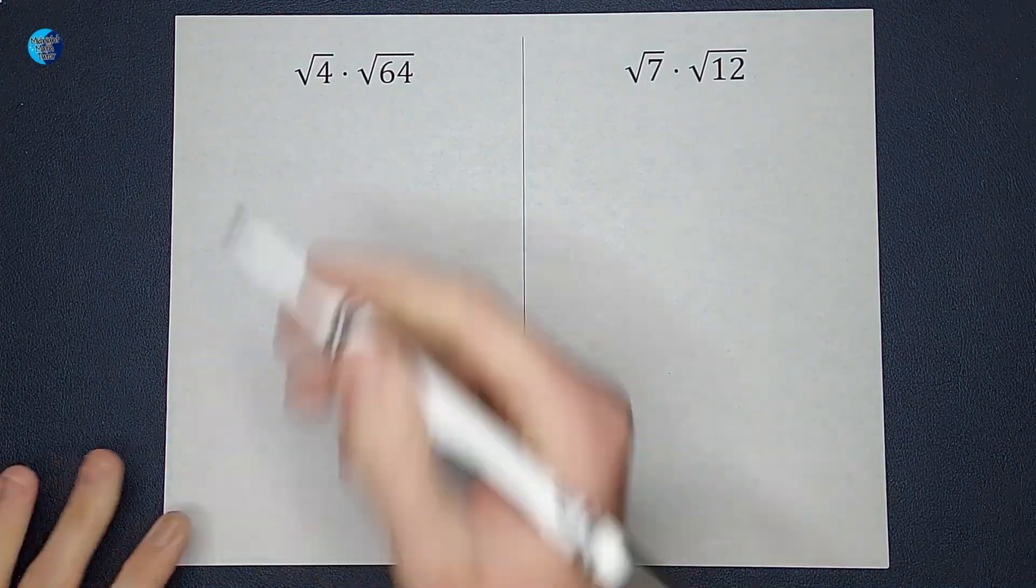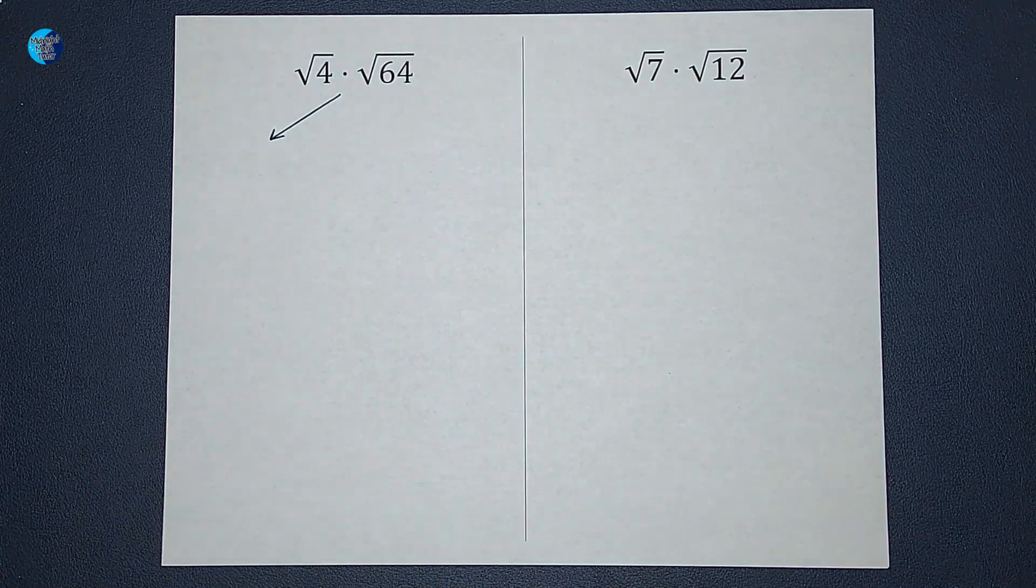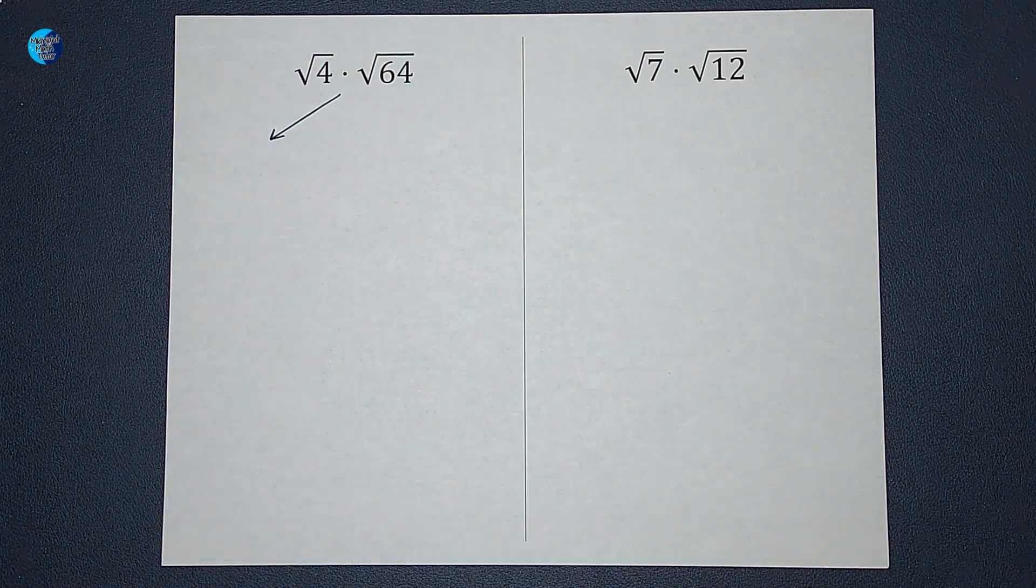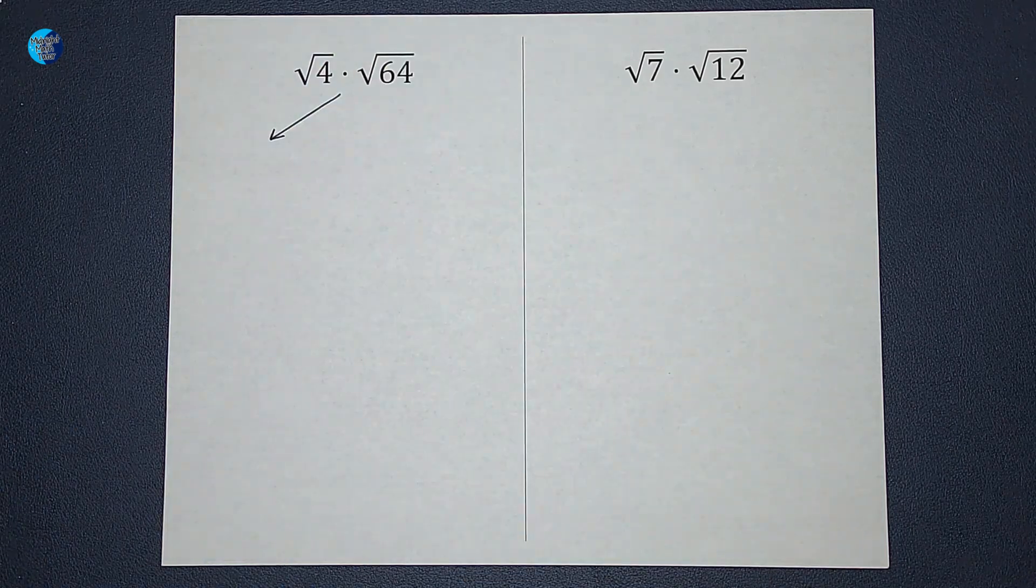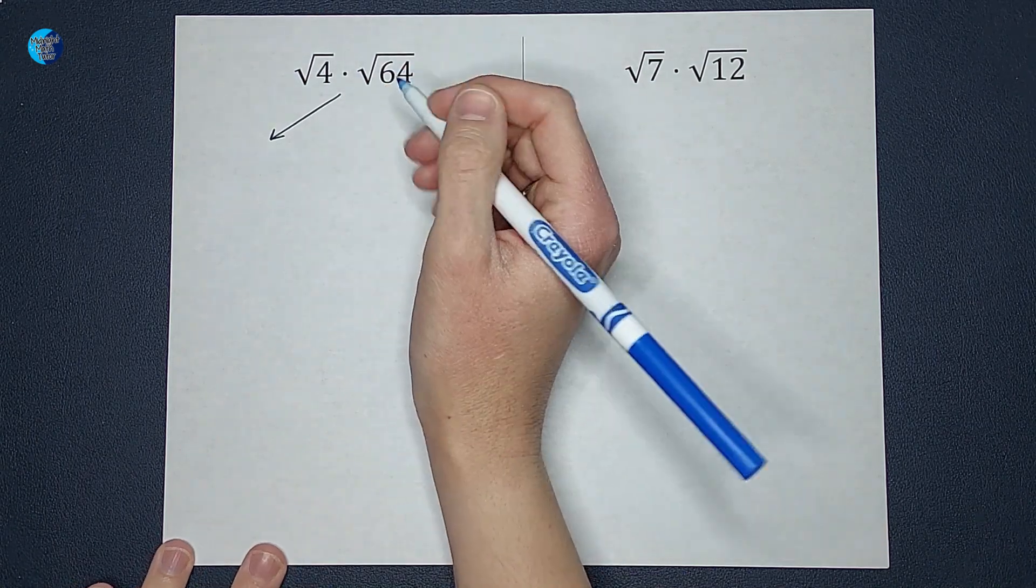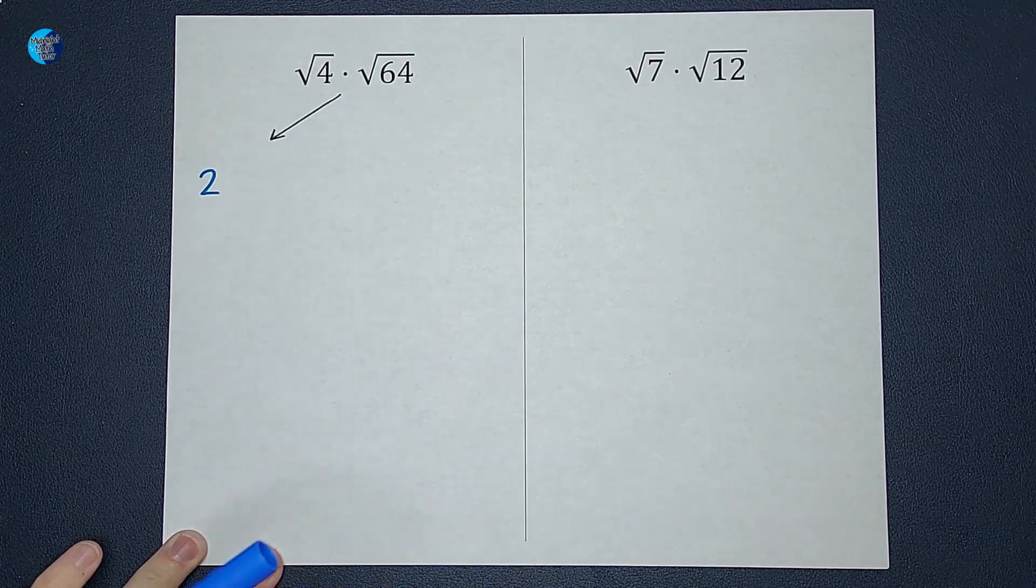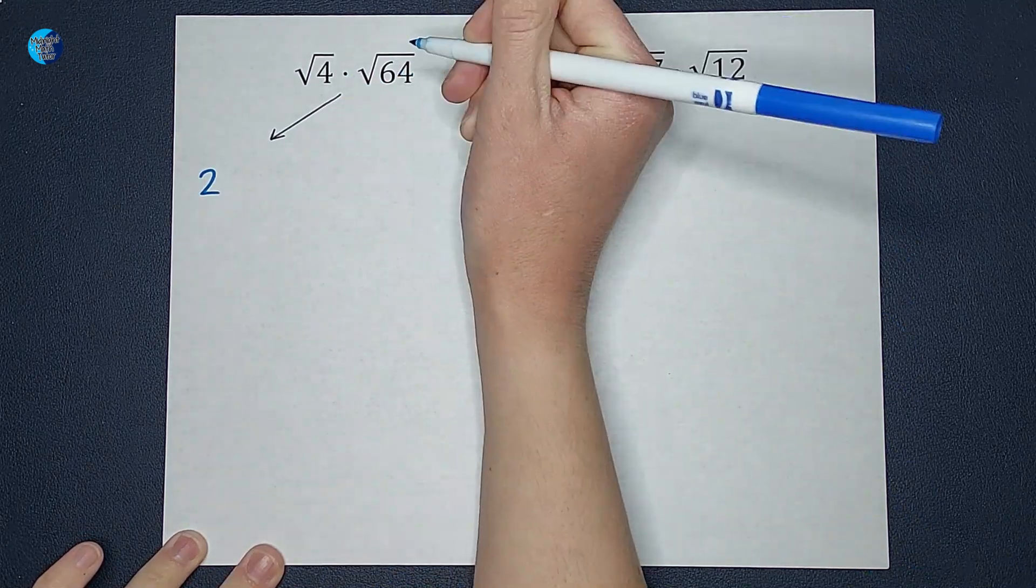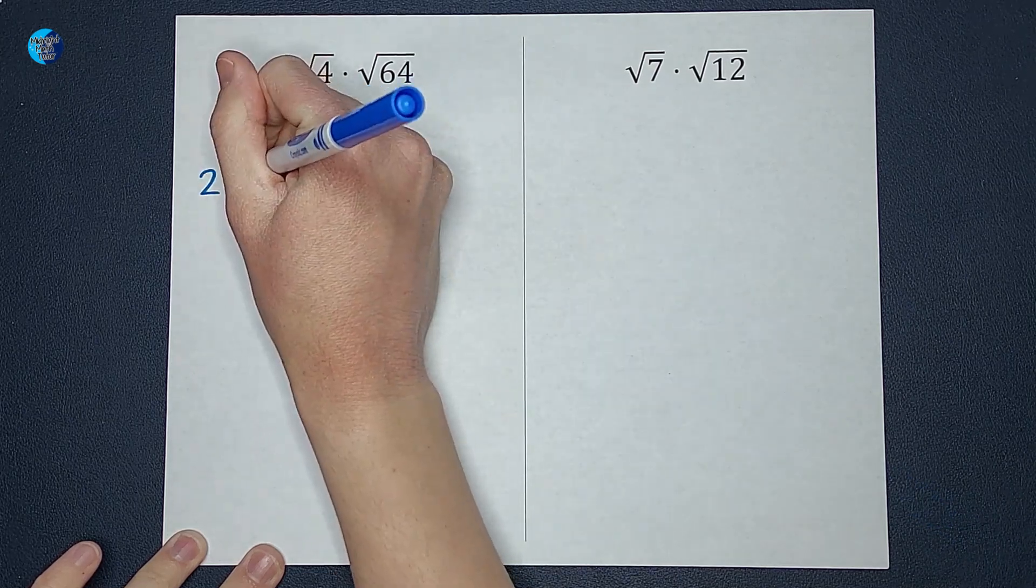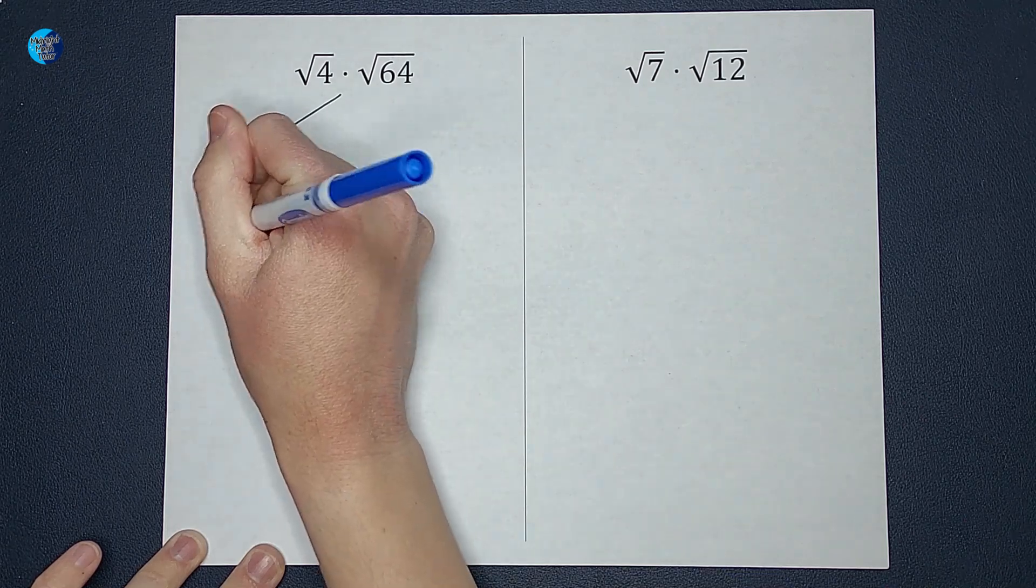If I were solving this, one way I could solve this would be to simplify the square roots first. The square root of 4 would give me 2, because 2 times 2 is 4, and the square root of 64 gives me 8, because 8 times 8 is 64. So then I'm left with 2 times 8, which is 16. Sweet!